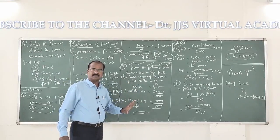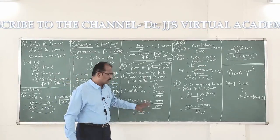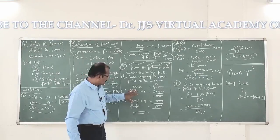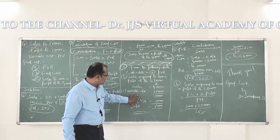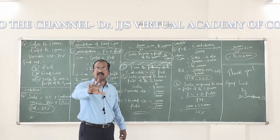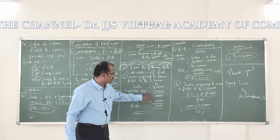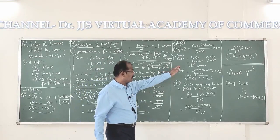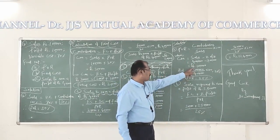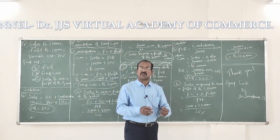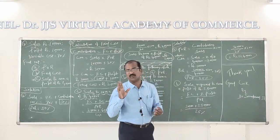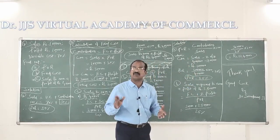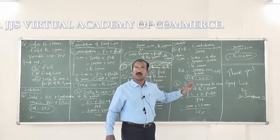Now let us calculate PVR. The formula is contribution divided by sales into 100. From the details, contribution equals sales minus variable overhead — that is 4 lakh minus 3 lakh — giving contribution of 1 lakh rupees. Applying the formula: 1 lakh divided by 4 lakh into 100, it gives us 25% as the profit volume ratio.